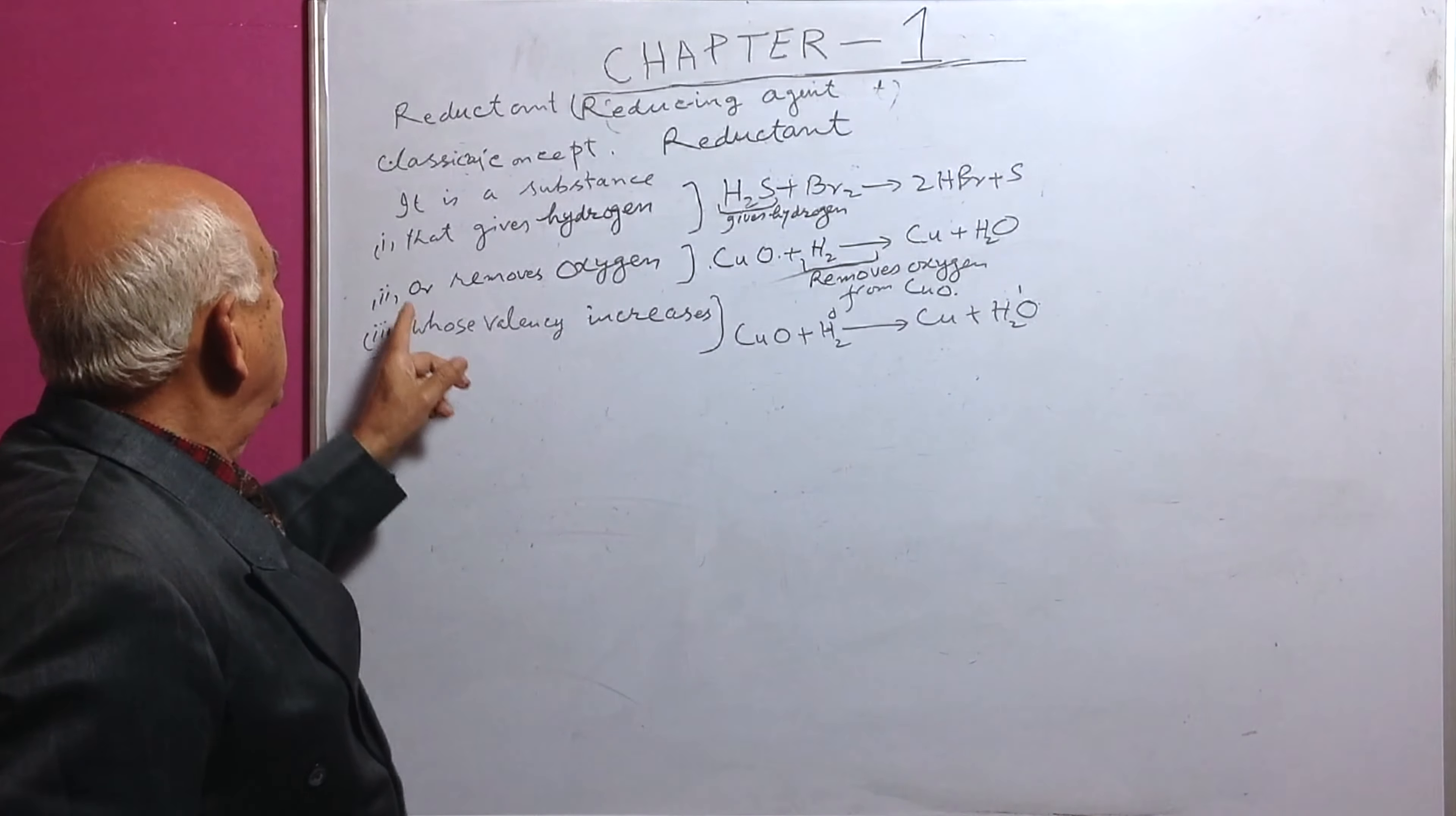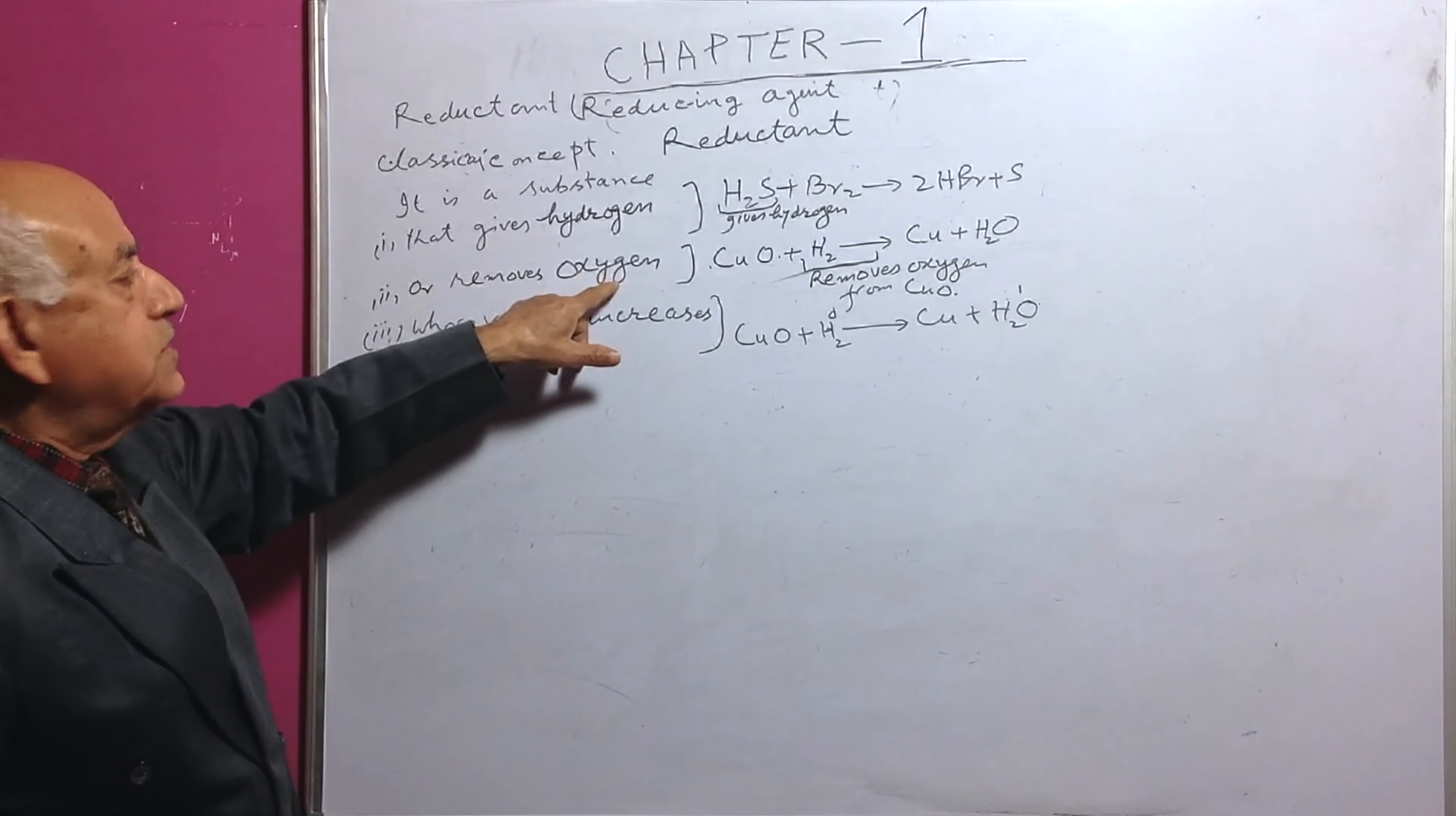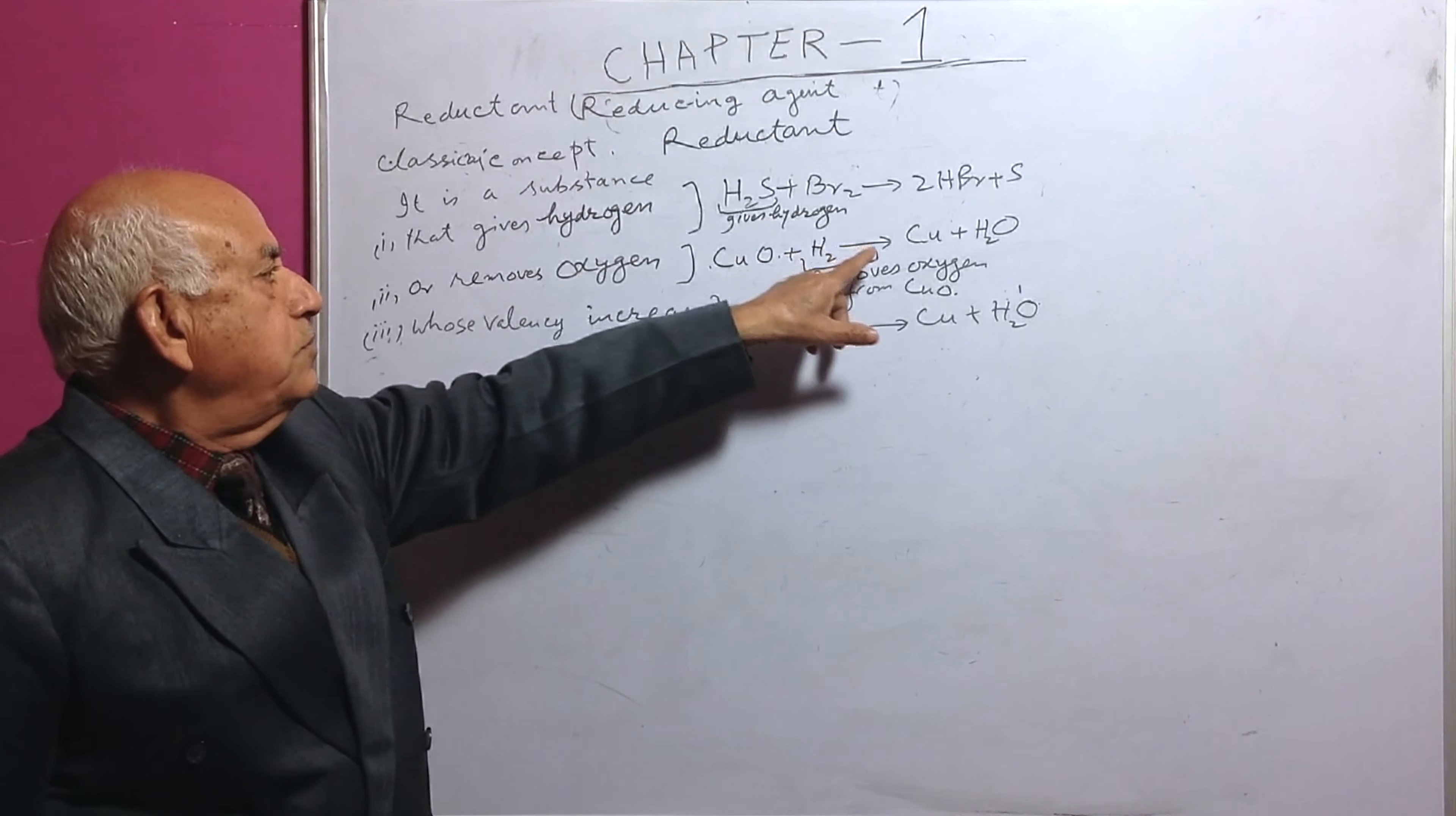Since H2S has given hydrogen, it means H2S is a reductant or a reducing agent to form HBr and sulfur.